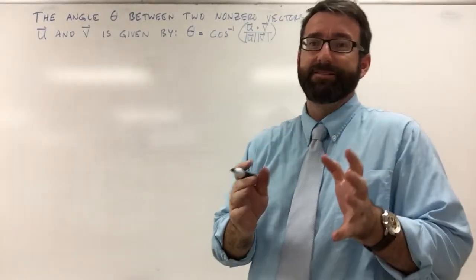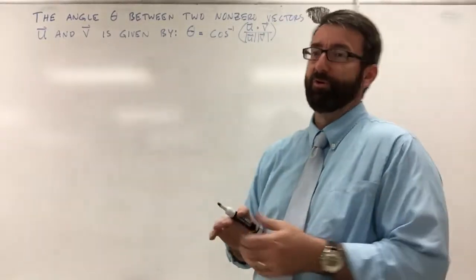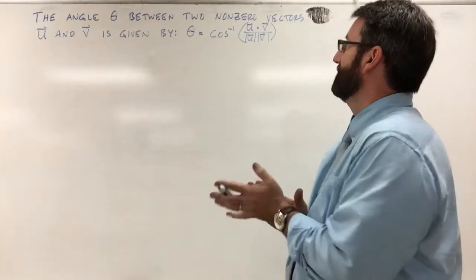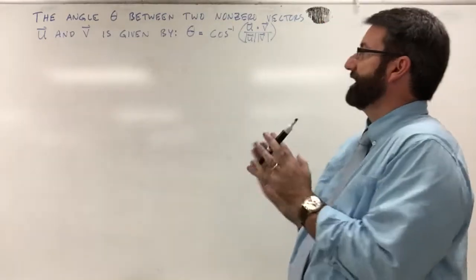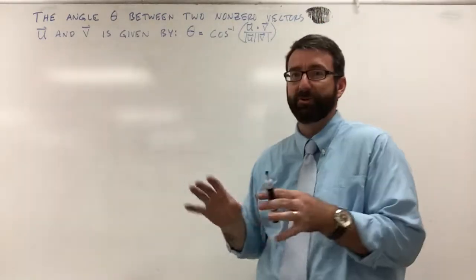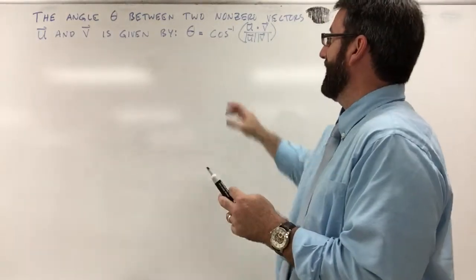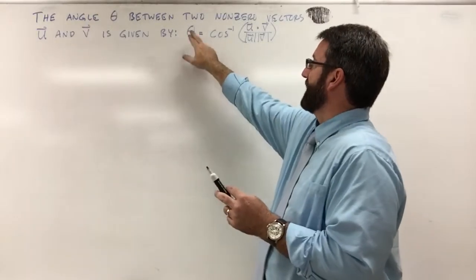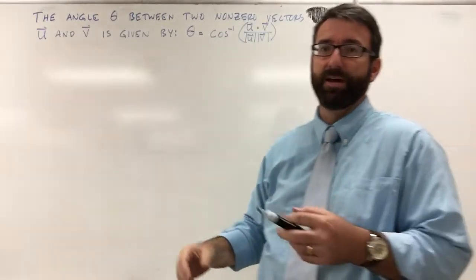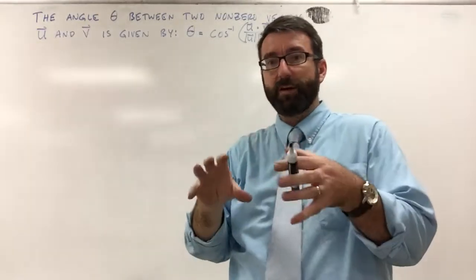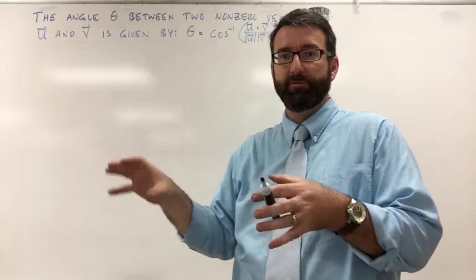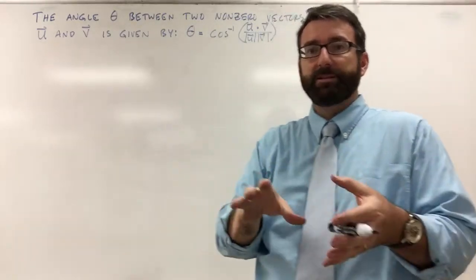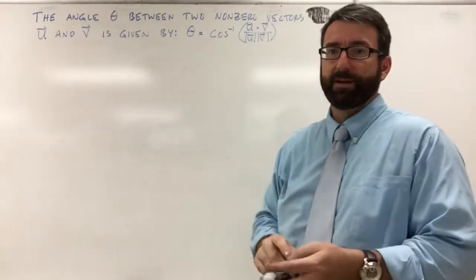I have been asked to give a proof of this theorem: that the angle theta between two non-zero vectors u and v is given by this equation — theta is equal to the inverse cosine of the dot product of u and v divided by the magnitude of u times the magnitude of v.